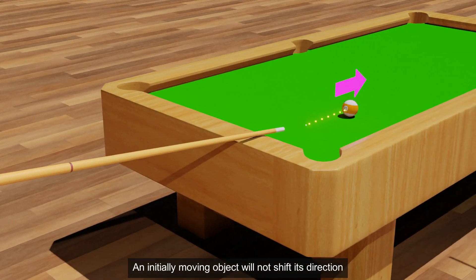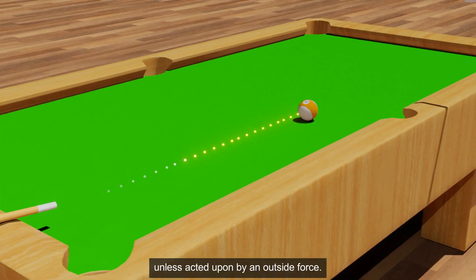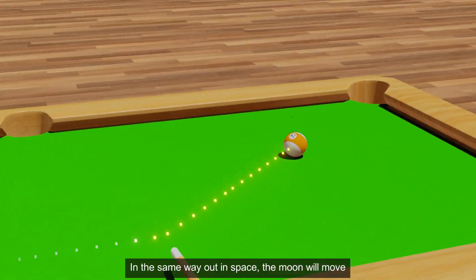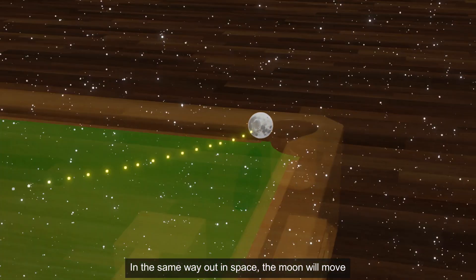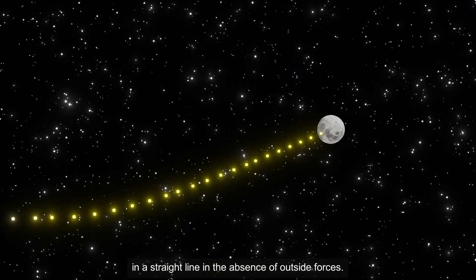An initially moving object will not shift its direction unless acted upon by an outside force. In the same way, out in space, the Moon will move in a straight line in the absence of outside forces.